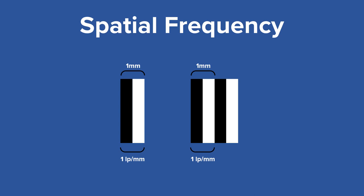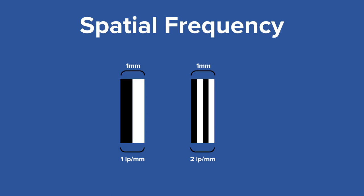Our drawing now represents one line pair per millimeter. The drawing on the left is one line pair per millimeter, and the drawing on the right is two line pairs per millimeter. We can keep going, and now we have five line pairs per millimeter.